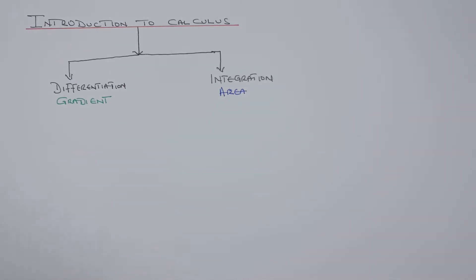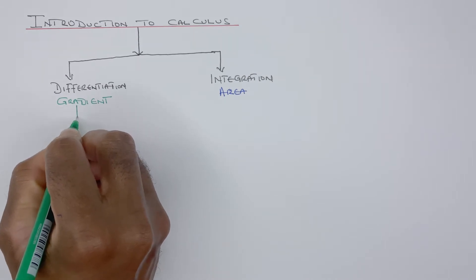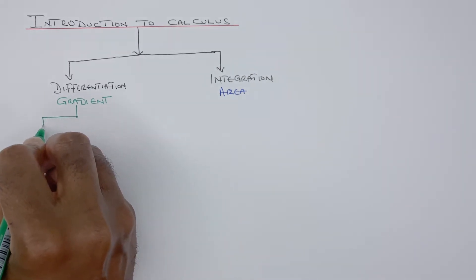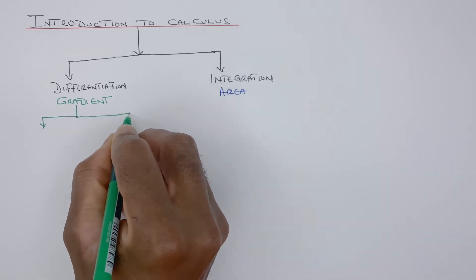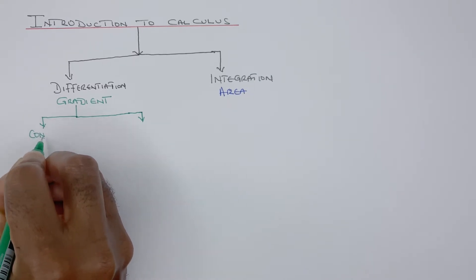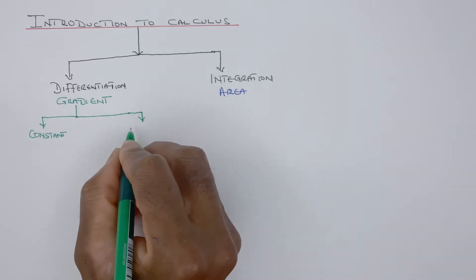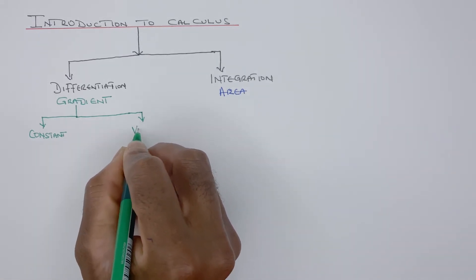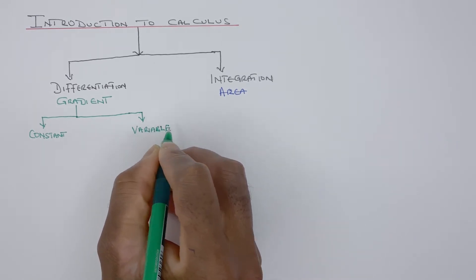There are two types of gradients that we know of. One is called the constant gradient, and the other one is called the variable gradient.